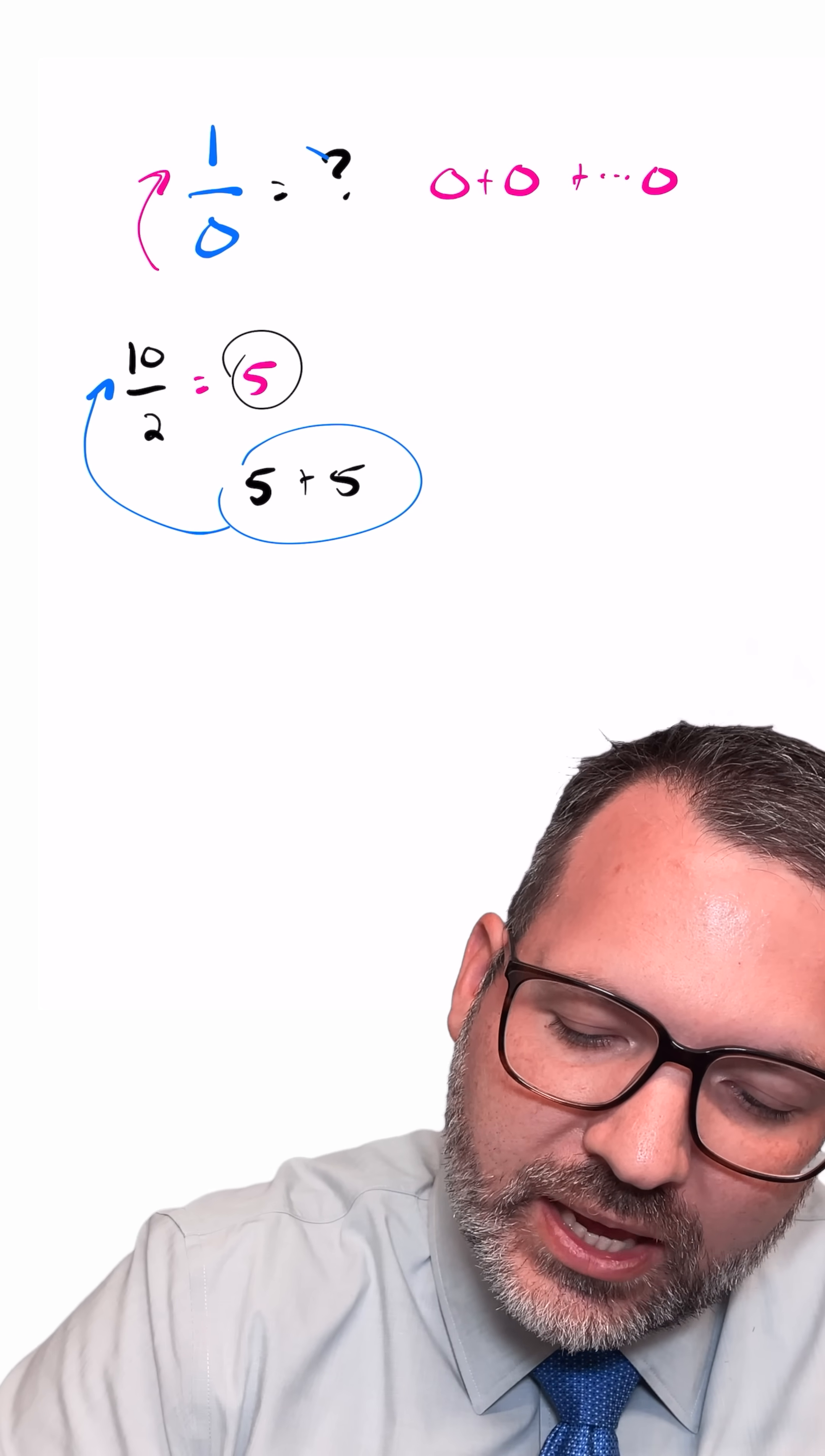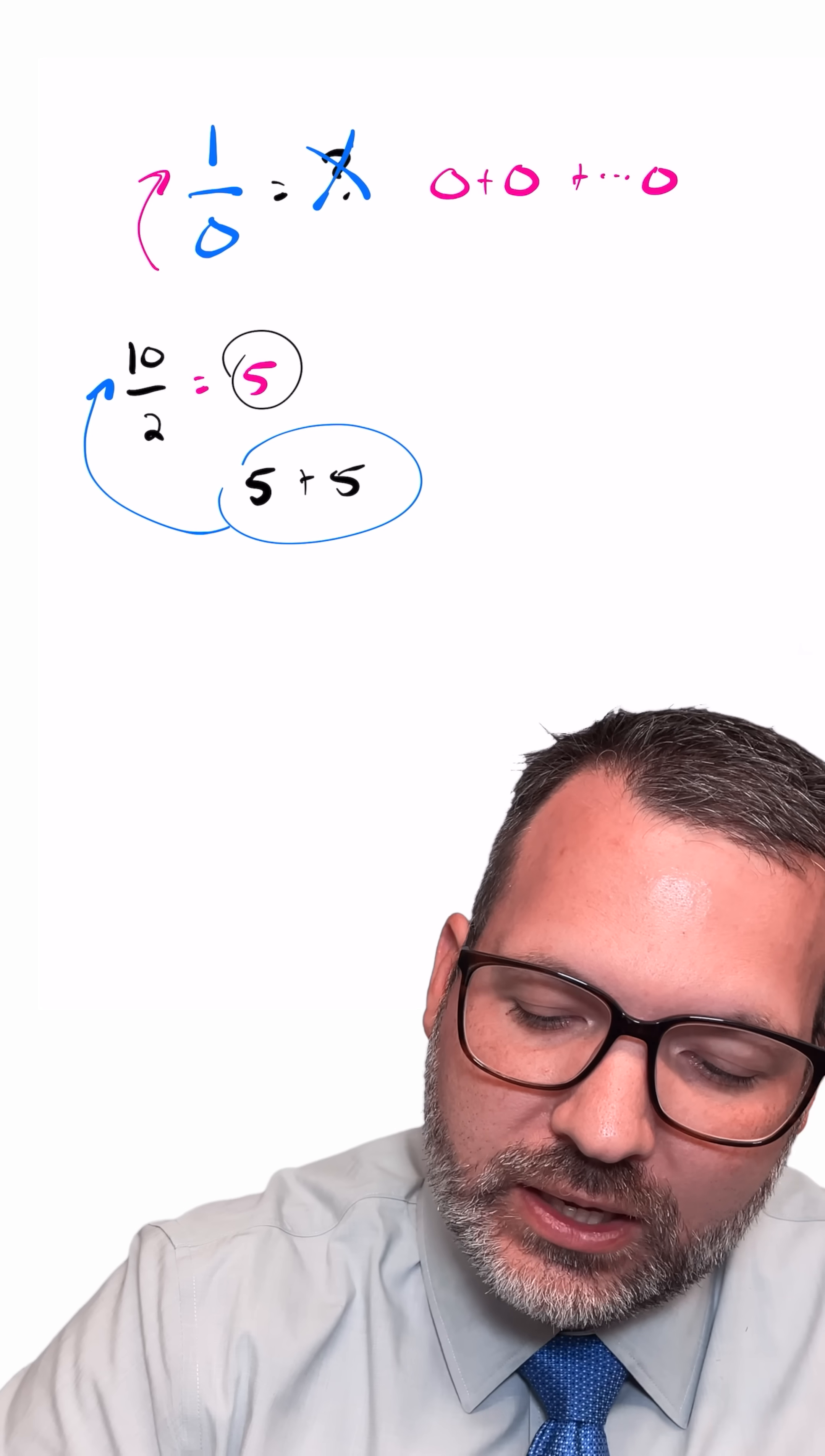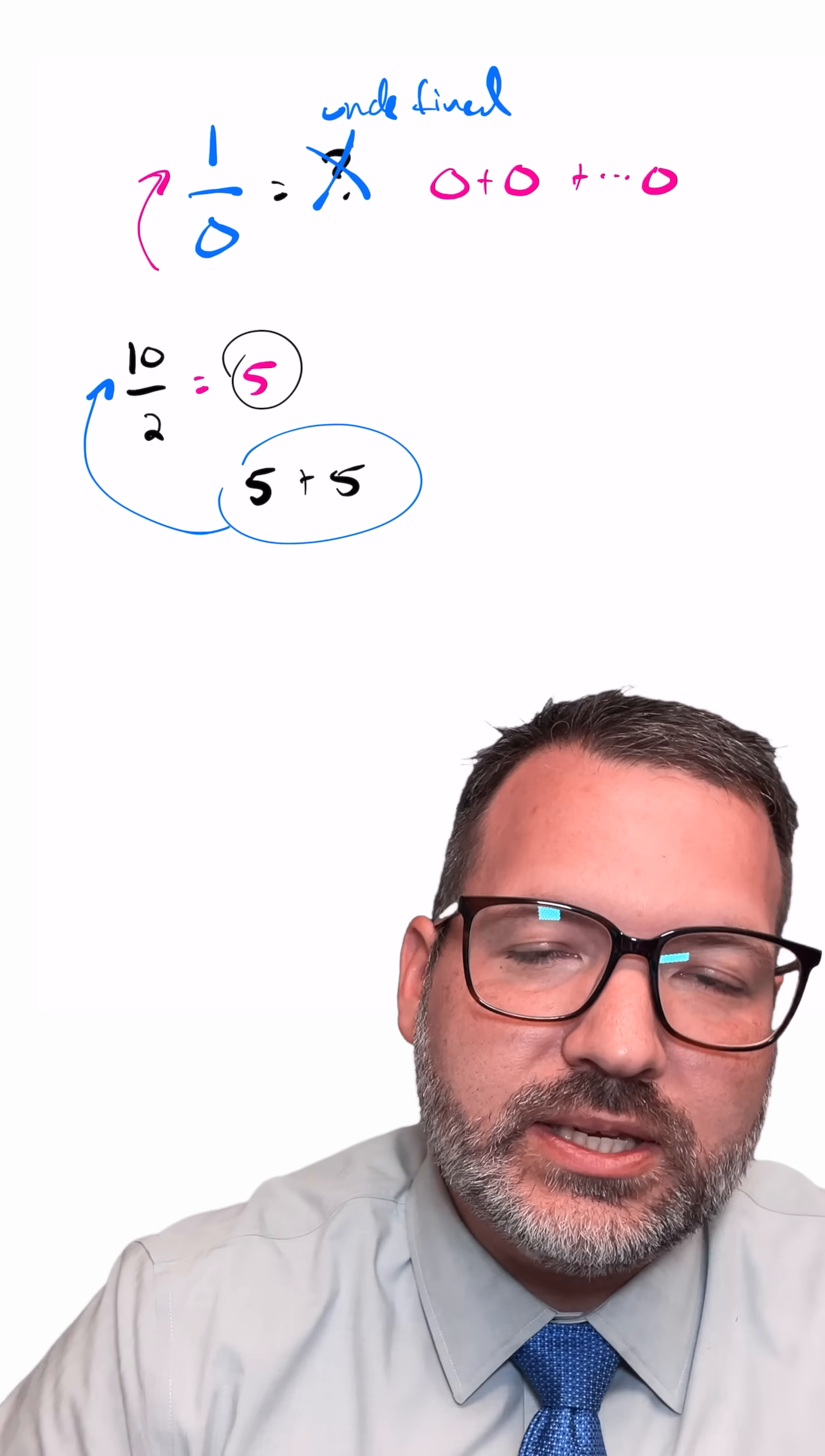And so it is in this sense that we say, you know what, 1 divided by zero doesn't really have a value that's going to give us any kind of consistency, and so we simply say that is undefined.